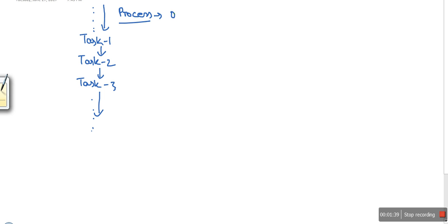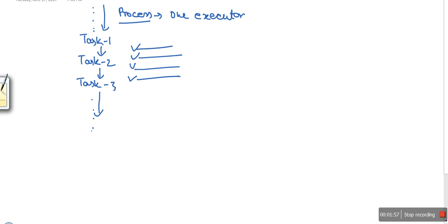In a single-thread process, there is only one executor. In your C program, if you have multiple statements, the first statement will be executed, then the next one, then the next one, because there is only one executor executing each statement one at a time.